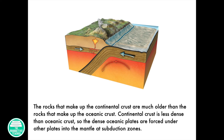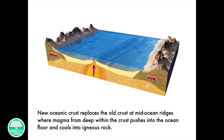Continental crust is less dense than oceanic crust, so the dense ocean plates are forced under other plates into the mantle at subduction zones. New oceanic crust replaces the old crust at mid-ocean ridges, where magma from deep within the crust pushes into the ocean floor and cools into igneous rock.